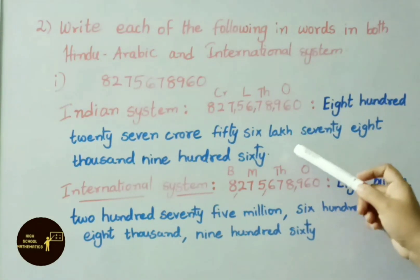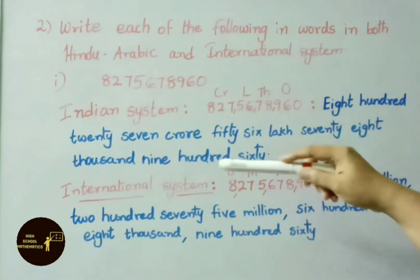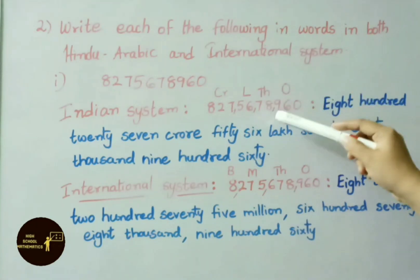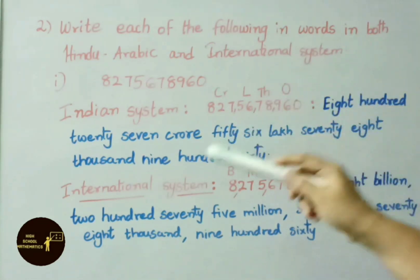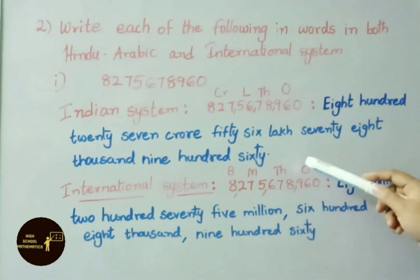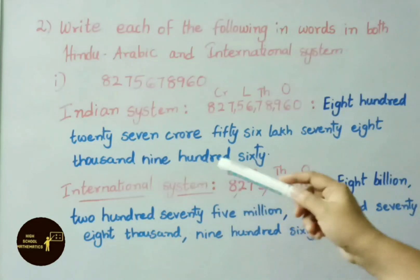To write in Indian system, we wrote the number and separate them by using commas. Let us read the number: 5,72,45,67,827. So same thing we have written in words: five hundred seventy two crore forty five lakh sixty seven thousand eight hundred twenty seven.